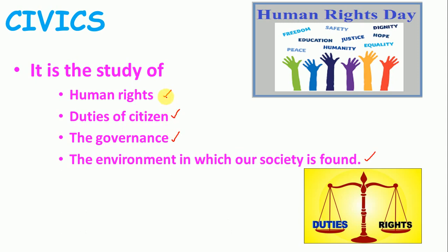We have discussed four points and I'll be discussing each in brief. Firstly, what are human rights? Human rights are rights which are inherited by all citizens, irrespective of their nationality, the religion they belong to, and whatever language they speak. Some examples are the right to education, right to safety, right to justice, and right to equality.